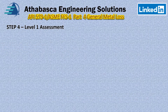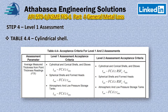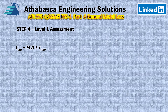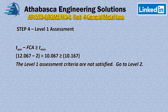API 579 has tables for different shapes. For our case we go to Table 4.4 for cylindrical shells, where all the equations are listed. For the Level 1 assessment of cylindrical and conical shells and elbows, there's a required relationship that must be satisfied. Spherical shells and atmospheric/low pressure tanks are covered as well. For Level 1, TM minus future corrosion allowance must be equal to or greater than T-min. We run the calculation and we do not pass. Therefore the Level 1 assessment is not satisfied, and we must proceed to Level 2.